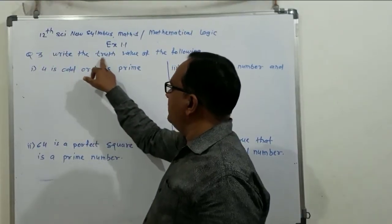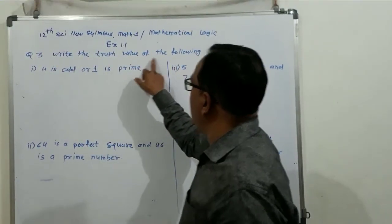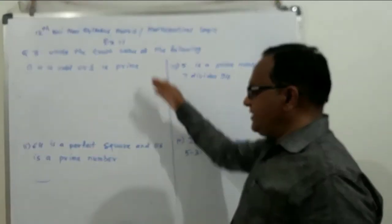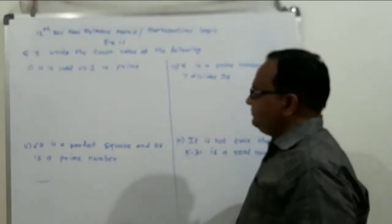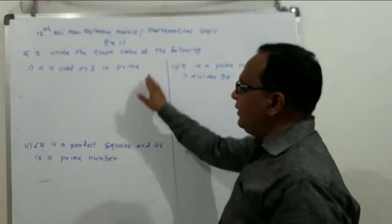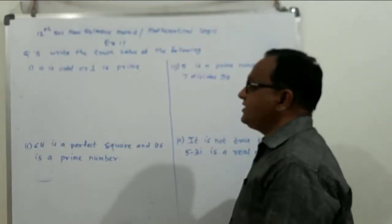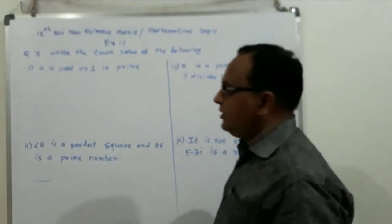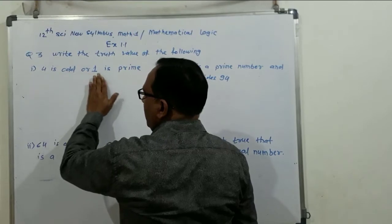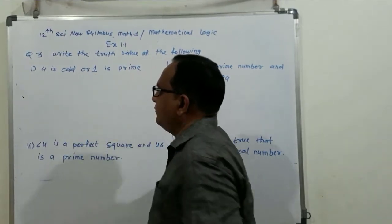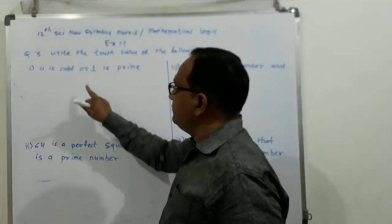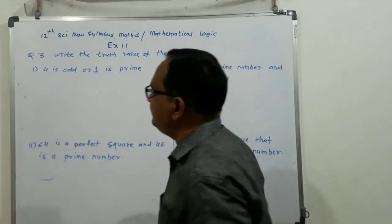Write the truth value of the following. Some statements are given and we have to find the truth value of each statement. The first statement is: 4 is odd or 1 is prime. It is a disjunction.